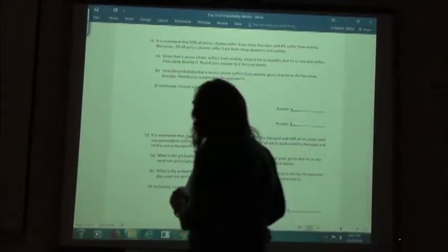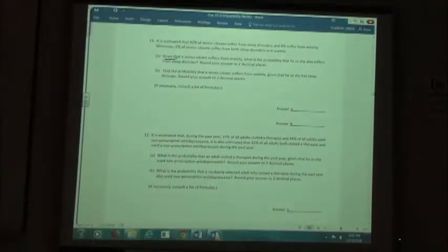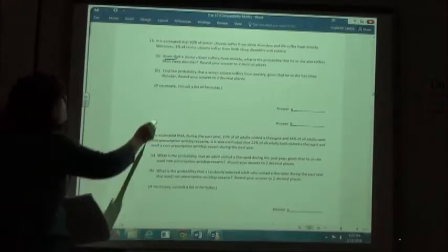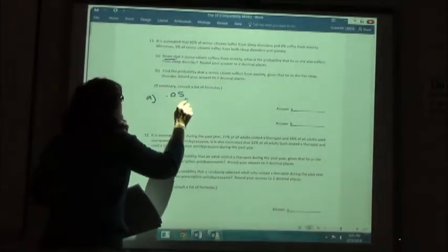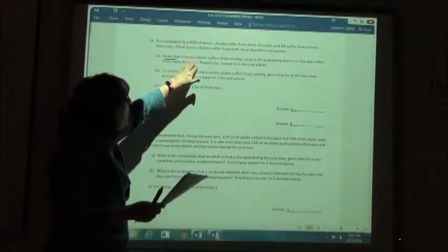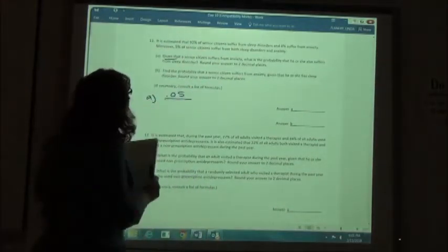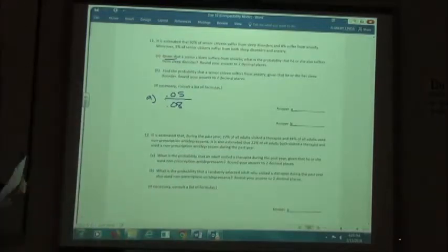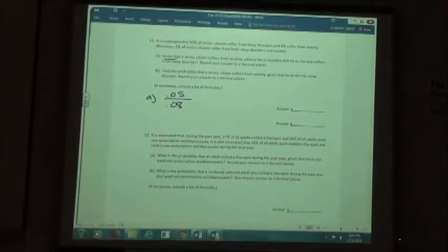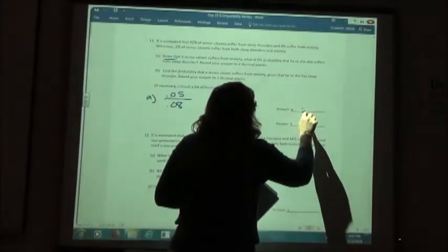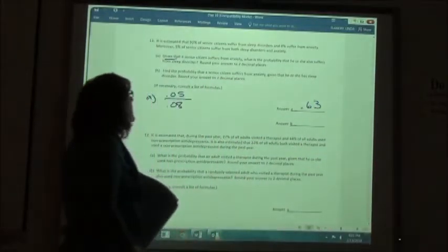Now some of the times they're a little nicer because they use the word given right in the problem. Given that senior citizens suffer from anxiety, what is the probability that he or she also suffers from a sleep disorder? So we are going to take the both, which is 5%, divided by the given part of it. The given part is that they suffer from anxiety, so the anxiety is going to go on the bottom, which is 8%. And we would get, rounding to two decimal places, 0.63.